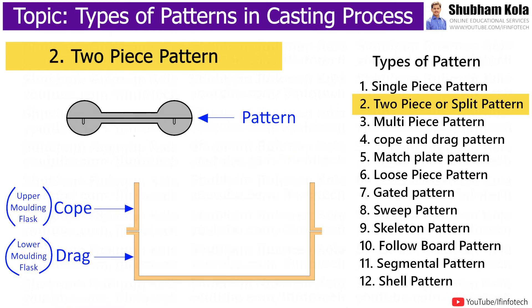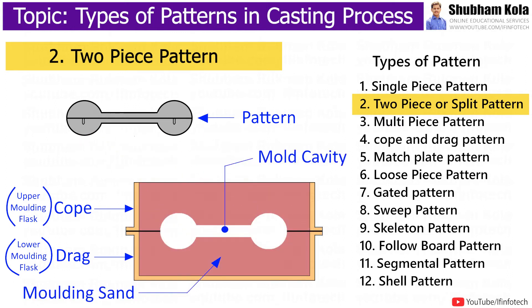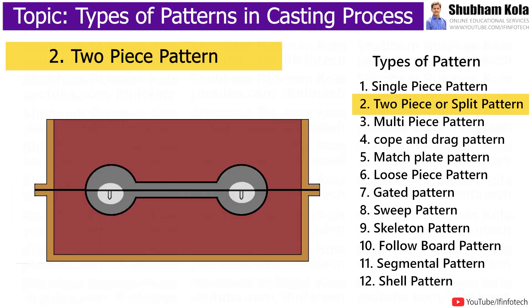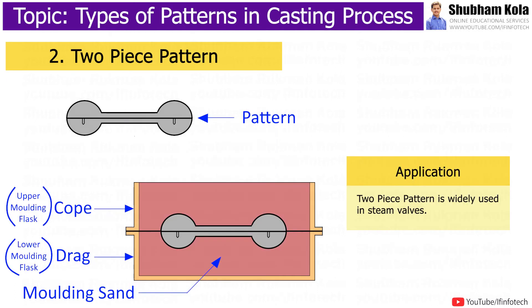The next type is two piece pattern, also called as split pattern. In this type of pattern, the half part is always moulded in drag and the other half part is moulded in cove. The cove part of pattern has dual pins, which are used to align two halves of the two-piece pattern. Holes in drag half match exactly with dual pins. This type of pattern is widely used in steam walls.